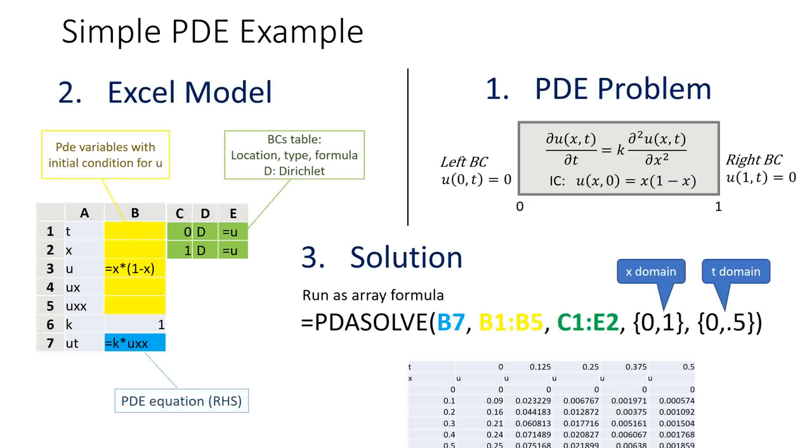The yellow cells B1 to B5 are reserved for the system variables which consists of the time T, the space X, the state variable U and the first and second derivatives UX and UXX.